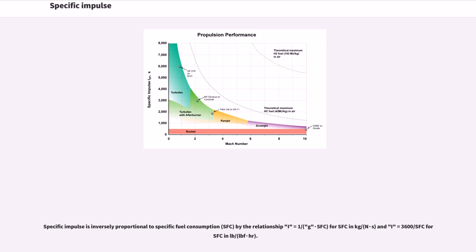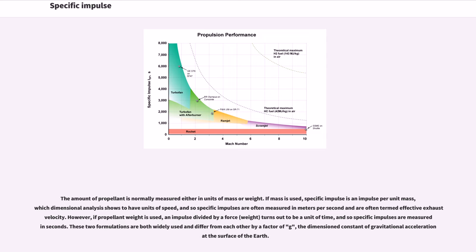Specific impulse is inversely proportional to specific fuel consumption by the relationship: I equals 1/SFC (in kg/N·s), and I equals 3600/SFC for SFC in pound per hour per pound.